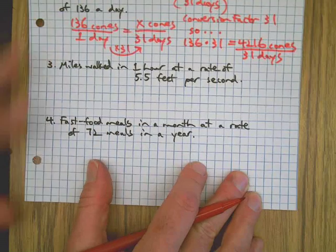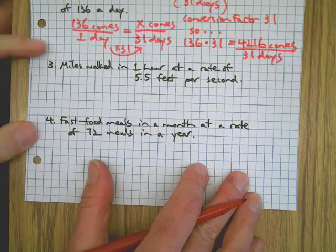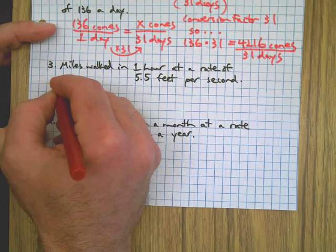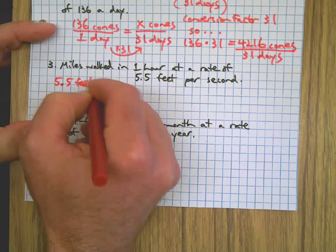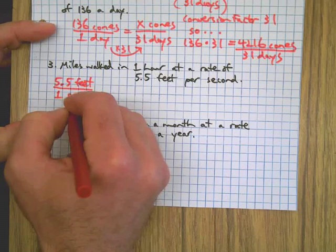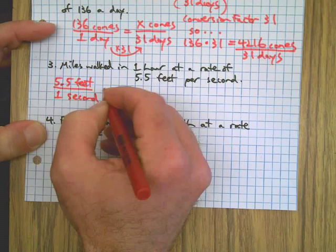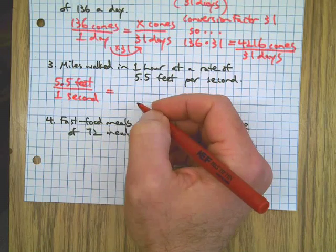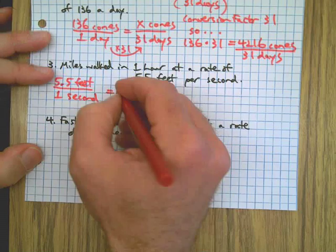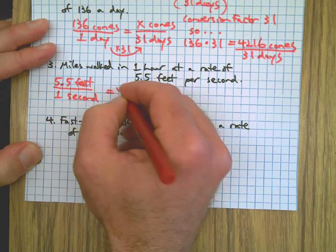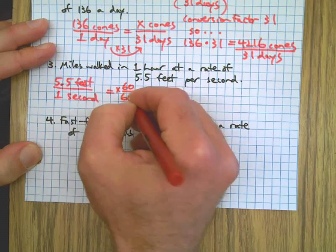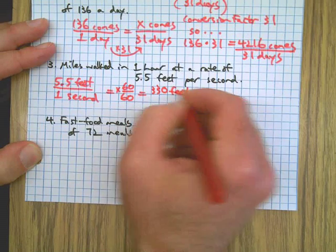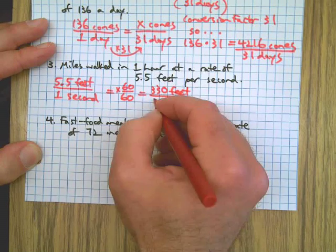Next one. Miles walked in one hour at a rate of five and a half feet per second. Okay. Five and a half feet in one second. Five is the same as we multiply this by 60. It's the same as 330 feet. Why did we multiply by 60? To change this to one minute.